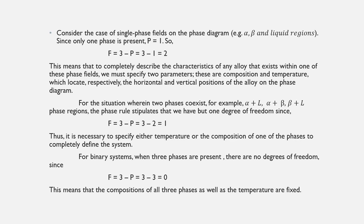For two-phase regions (e.g., alpha + L, beta + L, alpha + beta), F = 3 − 2 = 1. Thus it is necessary to specify either temperature or the composition of one phase to completely define the system. For binary systems when three phases are present, F = 3 − 3 = 0, meaning there are no degrees of freedom — the compositions of all three phases and the temperature are all fixed.